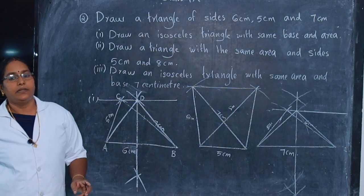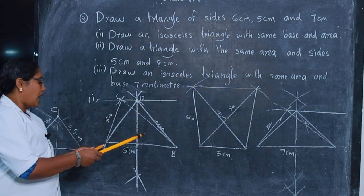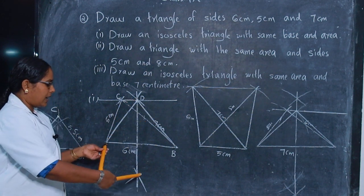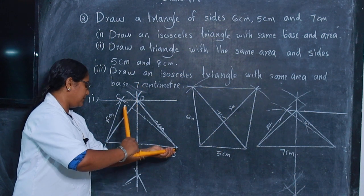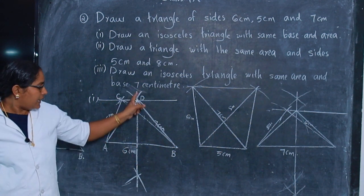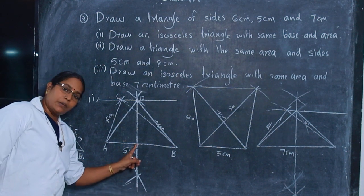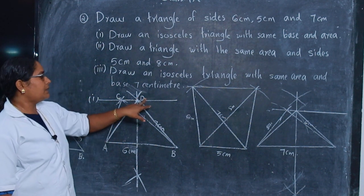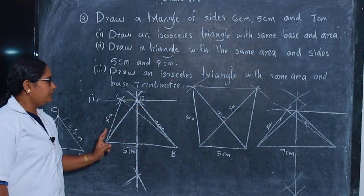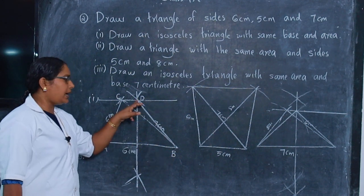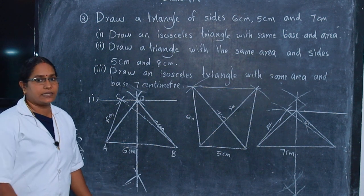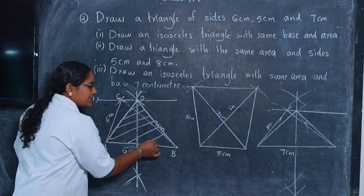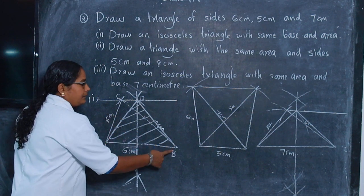To draw the perpendicular bisector: take in compass more than half, cut an arc up and down from A. Again fix at B, cut an arc up and down. Join that line passing through the midpoint of AB. That point intersects the parallel line — mark that point D. Join A and D, join B and D. Therefore we get an isosceles triangle with the same base and area. Its area is equal to the given triangle ABC.